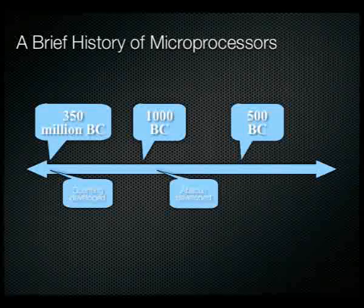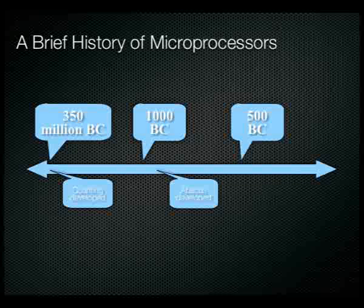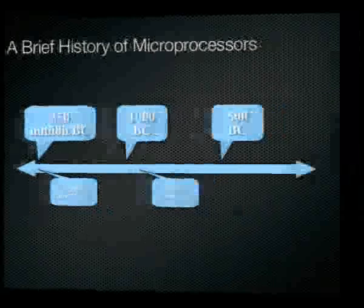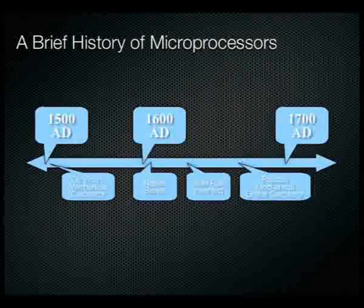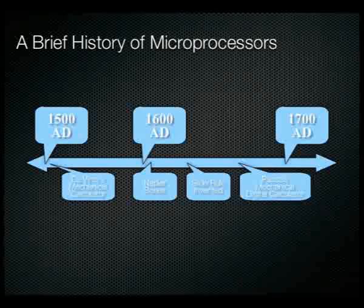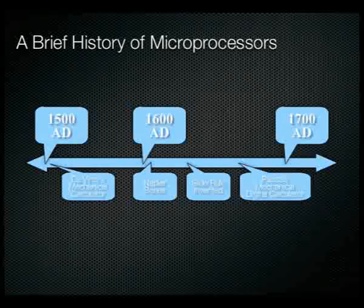In the era between 1000 BC and 500 BC, many mechanical machines were developed to support mathematics — devices like the abacus. This very simple basic computational equipment was developed in this era. The abacus made it very easy for people to add and subtract quickly. Moving to the 1500s through 1700s: Leonardo da Vinci developed a mechanical calculator in 1534 AD, and John Napier created Napier's Bones — multiplication tables — in 1620 AD.